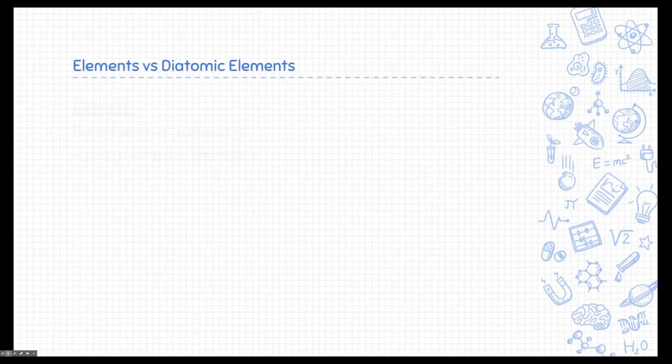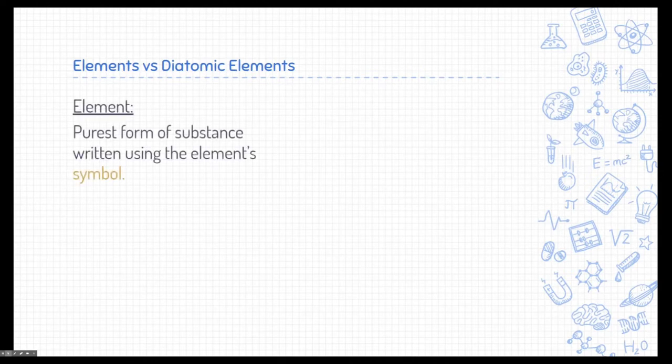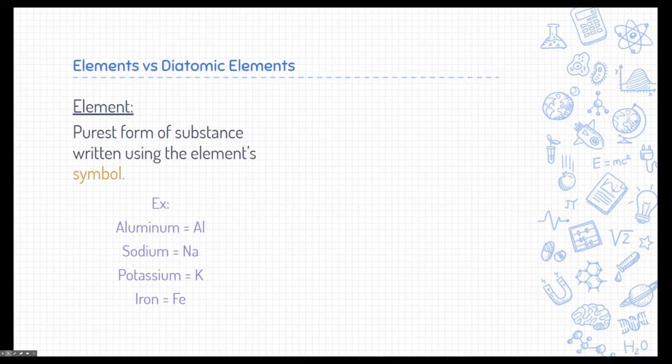The first types are elements versus diatomic elements. Elements are pretty easy. Elements are the purest form of a substance, and you just write it using an element symbol. I've highlighted the word symbol because this is something you could refer to on the periodic table. For example, if I need to know how to write aluminum, I go look at the periodic table and the symbol is Al. Sodium is Na, potassium is K, and iron is Fe.